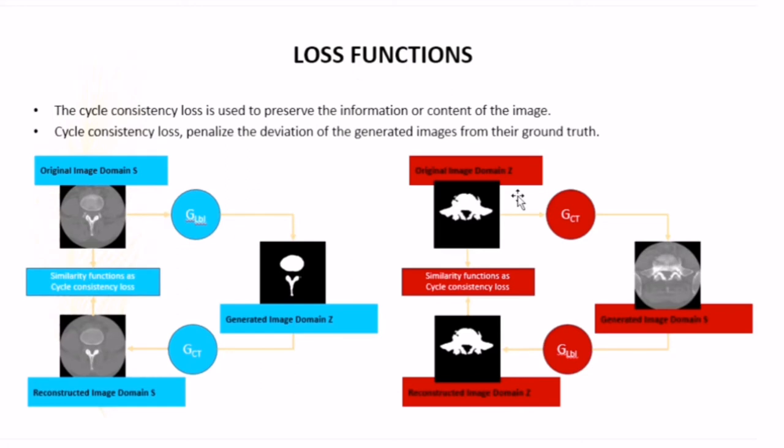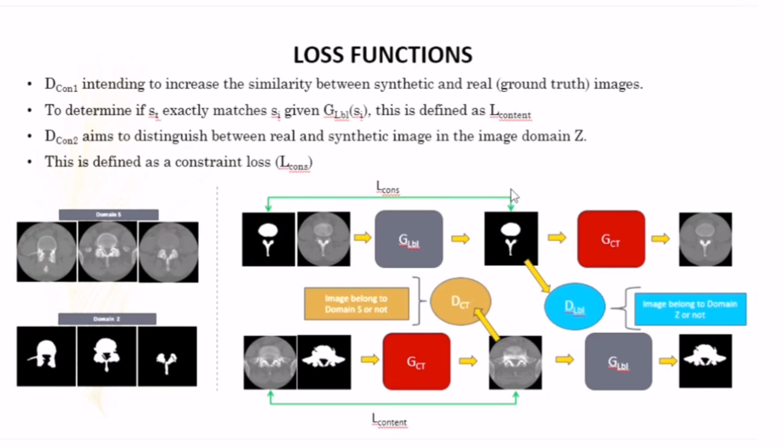The other one is the cycle consistency loss. It is used to preserve the information or content of the image. The cycle consistency loss penalizes the deviation of the generated image from their ground truth. The next that makes it different with existing methods is we introduce D_CON1, which is intending to increase the similarity between synthetic and real ground truth of the image. It tries to determine if S_T exactly matches S_I that is given by D_label. It is defined as loss content. And then we also introduce the second one, D_CON2, aimed to distinguish between real and synthetic images in the domain set. This is defined as constraint loss.